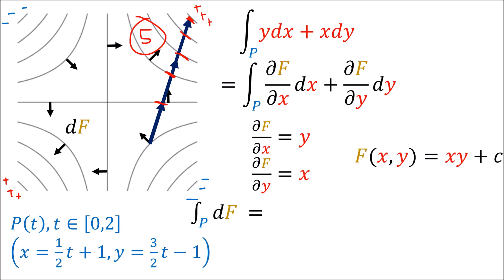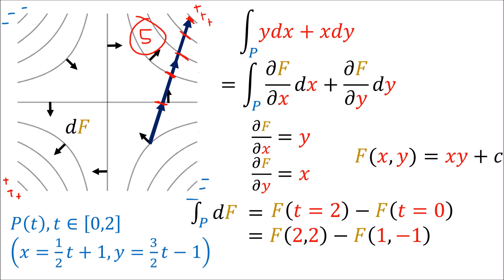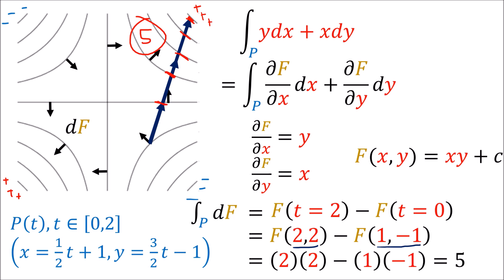Using the fundamental theorem of calculus algebraically, all we need to do is subtract the value of f at the endpoints. At t equals 2 the path gives point (2, 2), and at t equals 0 it gives point (1, −1). Evaluating f(x,y) = x·y at those points: 2 times 2 minus 1 times negative 1, which equals 4 plus 1 = 5 — exactly what we expect.